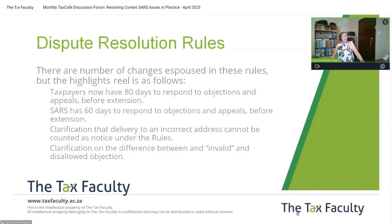As opposed to having the standard 30 days to respond to objections and appeals, you now have 80 working days. However, SARS has given themselves 60 days. On the other hand, they didn't give themselves 80, so let's work with that and be grateful for the extension.